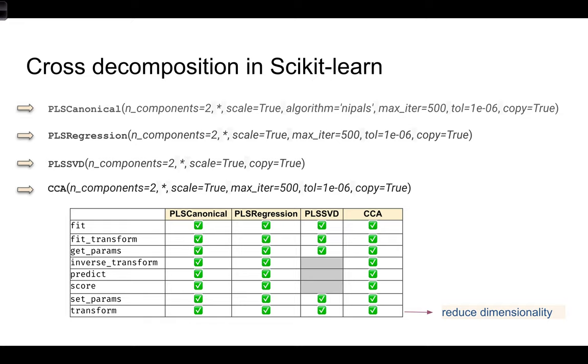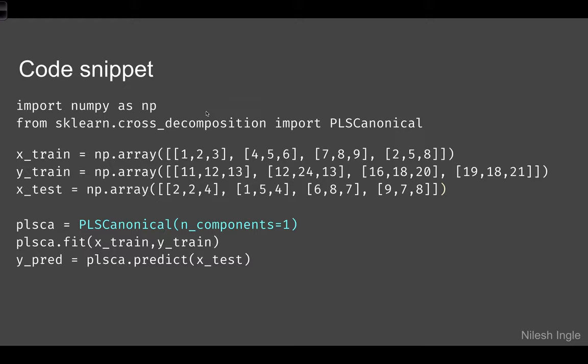In the code snippet, the implementation is standard scikit-learn using sklearn.cross_decomposition. We can import PLSCanonical, define X_train and Y_train — note Y_train has three columns rather than just one — then specify the number of components, perform the fit, and predict on the test set.